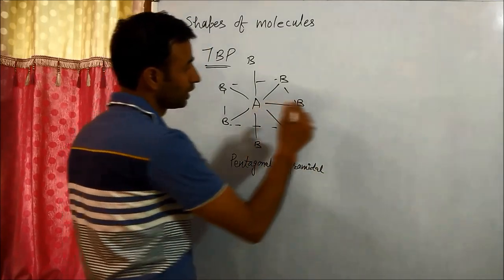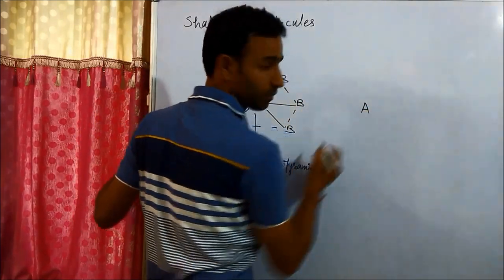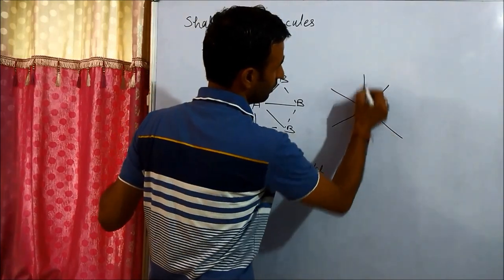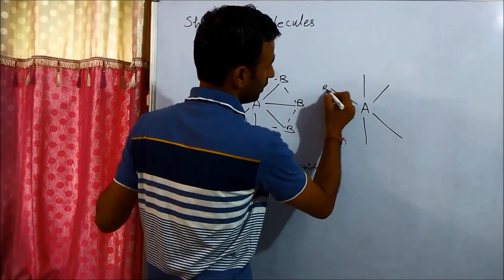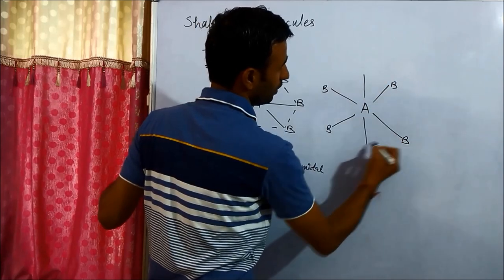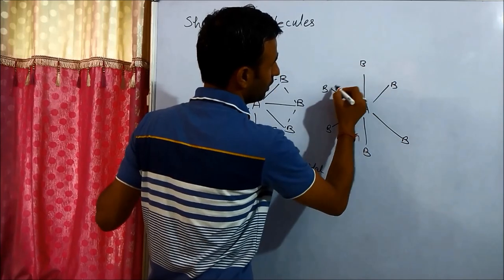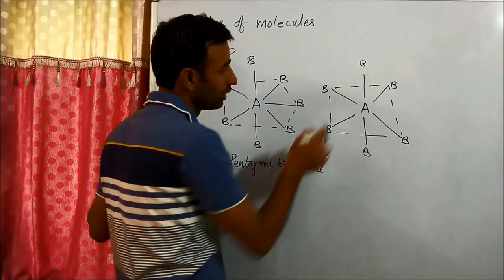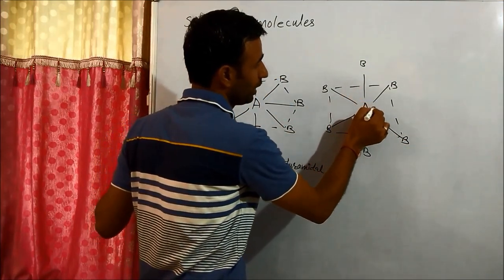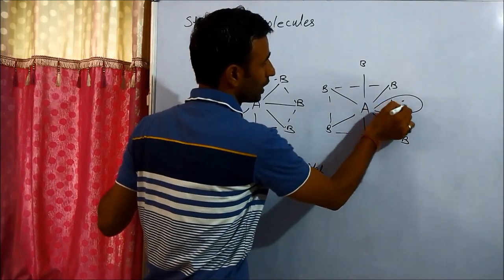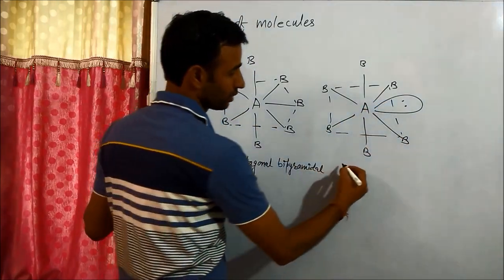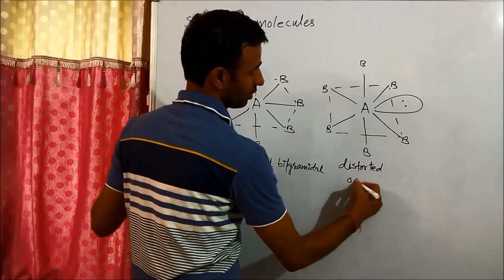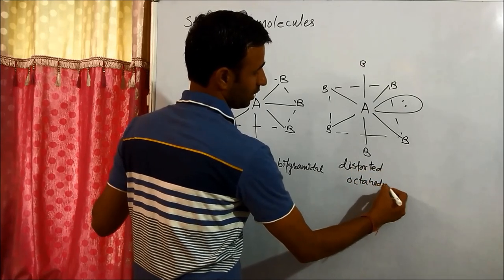If we have one lone pair, then its shape becomes distorted octahedral. Six bond pairs form octahedral, and one of the positions is occupied by a lone pair, so it is distorted octahedral.